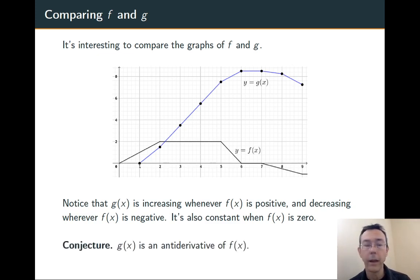So this leads to a very natural conjecture, that g(x) is an antiderivative of f(x). Or to say it differently, that f(x) is a derivative of g(x). So that's something that we'll want to explore next.